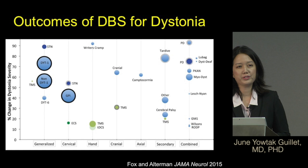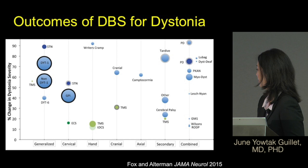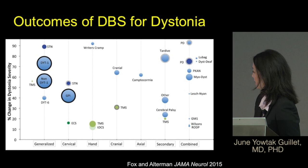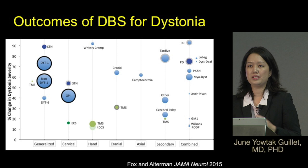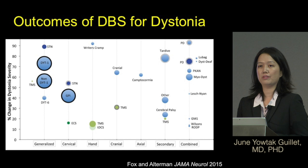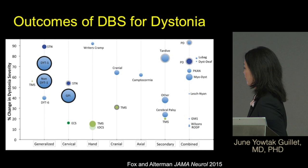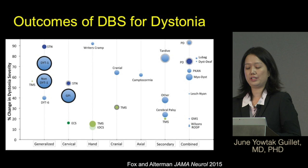A paper reviewed outcomes of different types of DBS for dystonia across multiple studies. The x-axis shows different dystonia groups — generalized and cranial — and the y-axis shows percentage change in dystonia severity. Most studies focused on generalized or inherited dystonia, which traditionally shows the most improvement. As you can see, most studies show over 50% improvement for this type. For cranial dystonia or Meige syndrome, studies suggest DBS is also effective, with about 60 to 70 percent effectiveness.